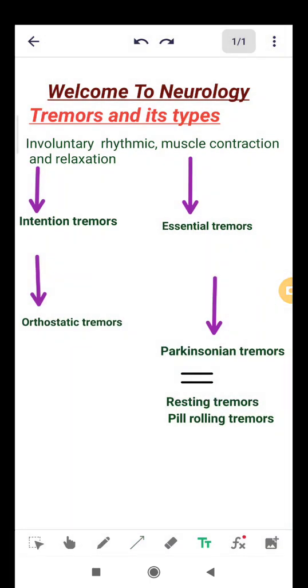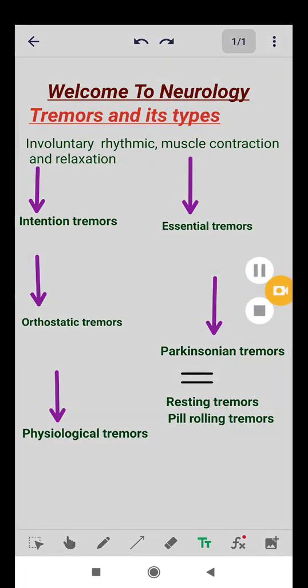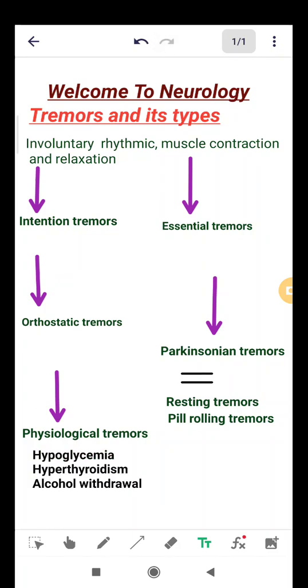Now let's discuss the final type of tremor, physiological tremors. Physiological tremors are noticed in normal individuals and are usually caused by hypoglycemia,